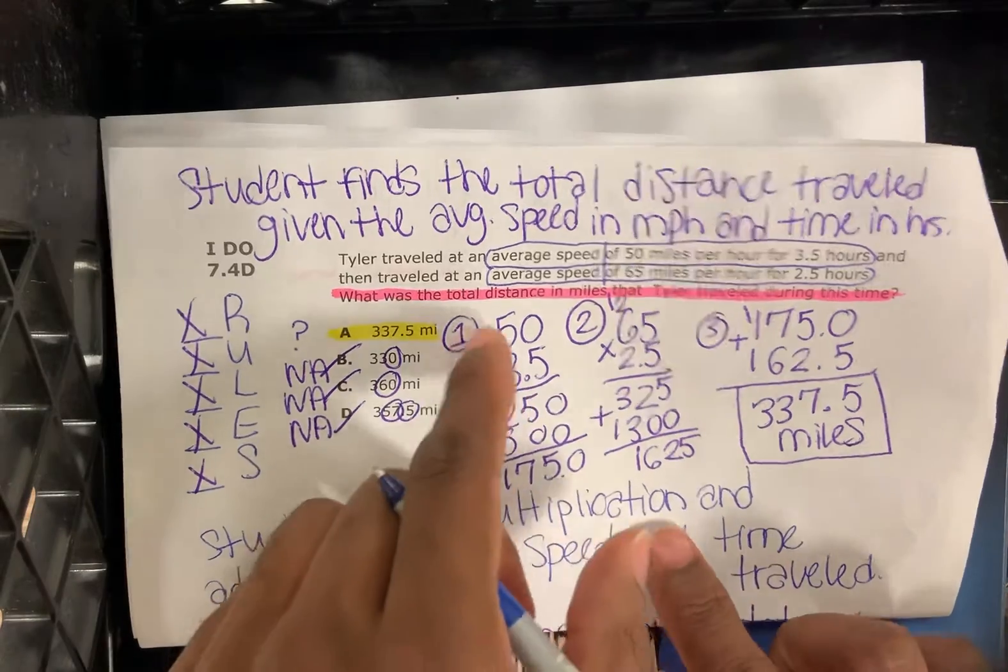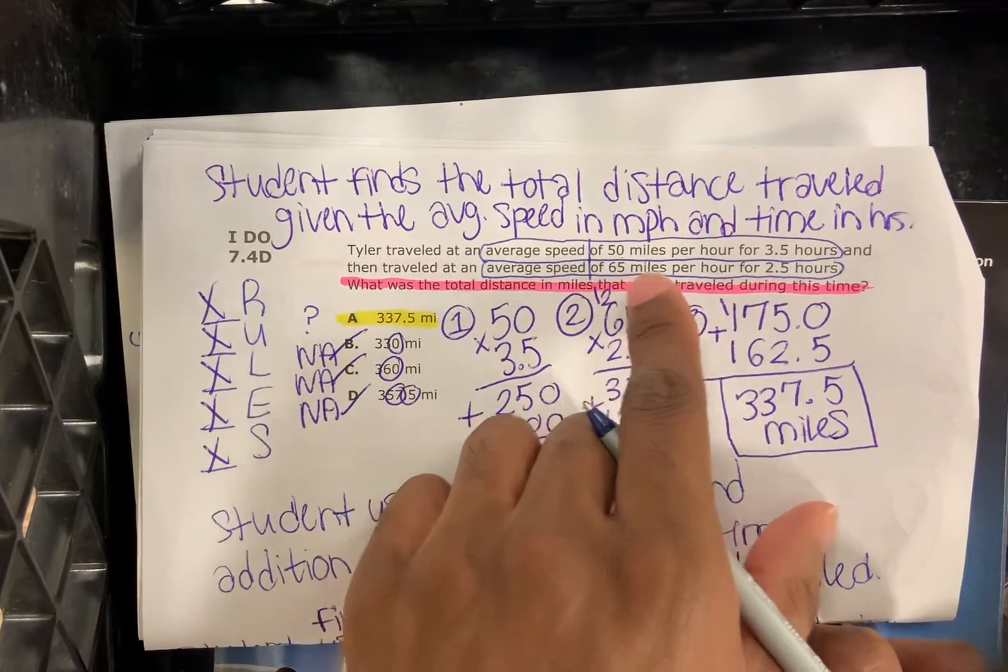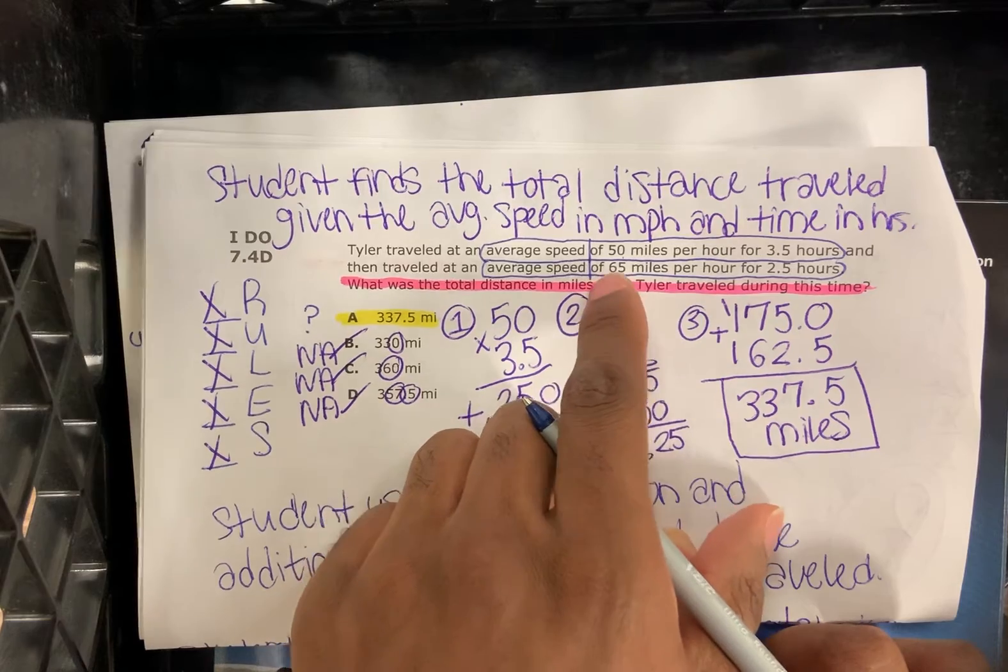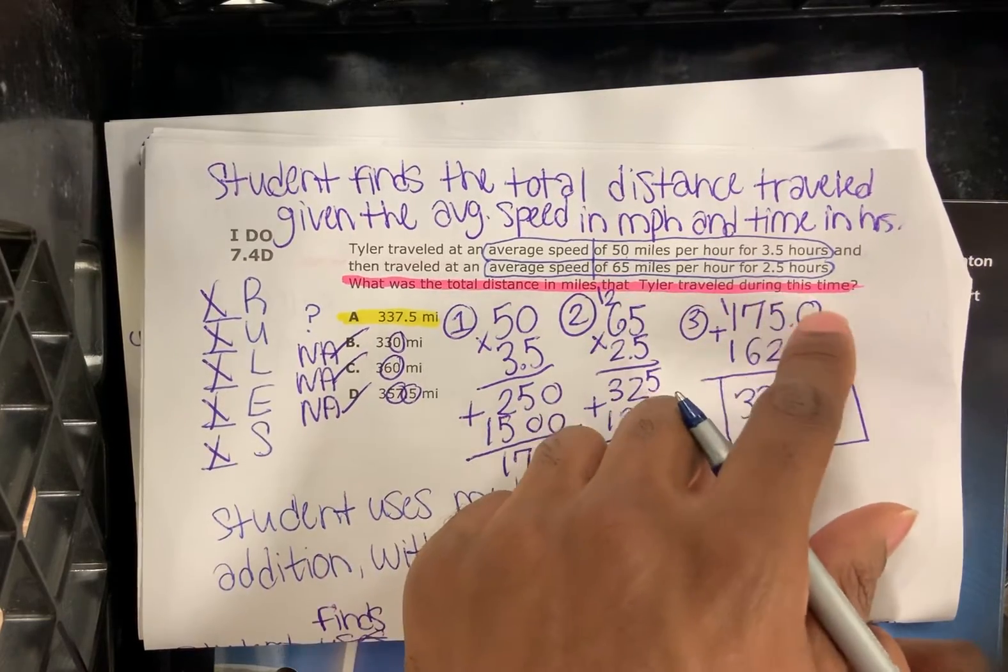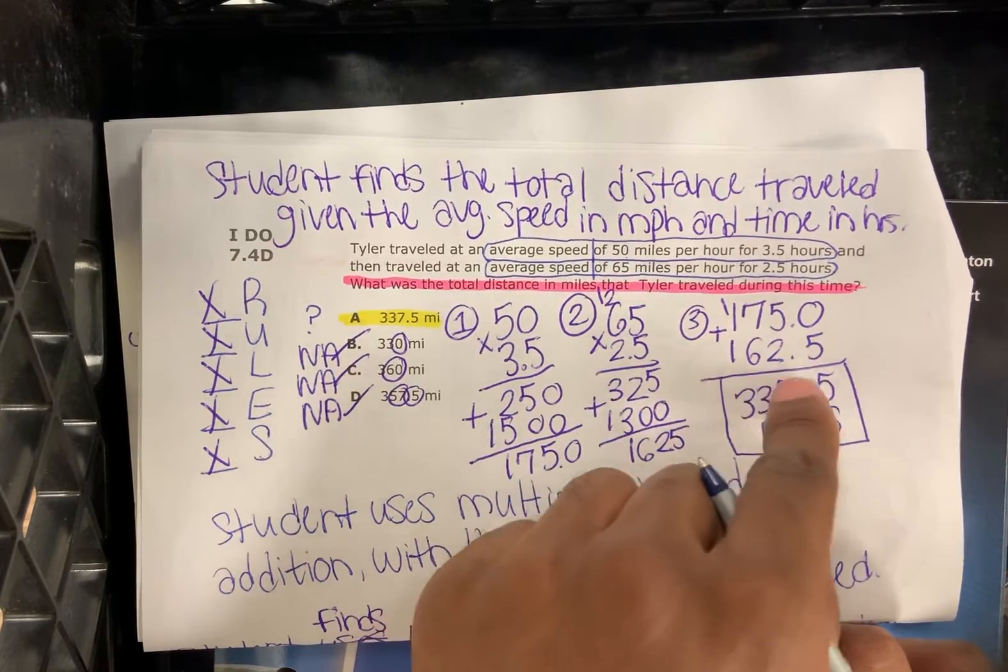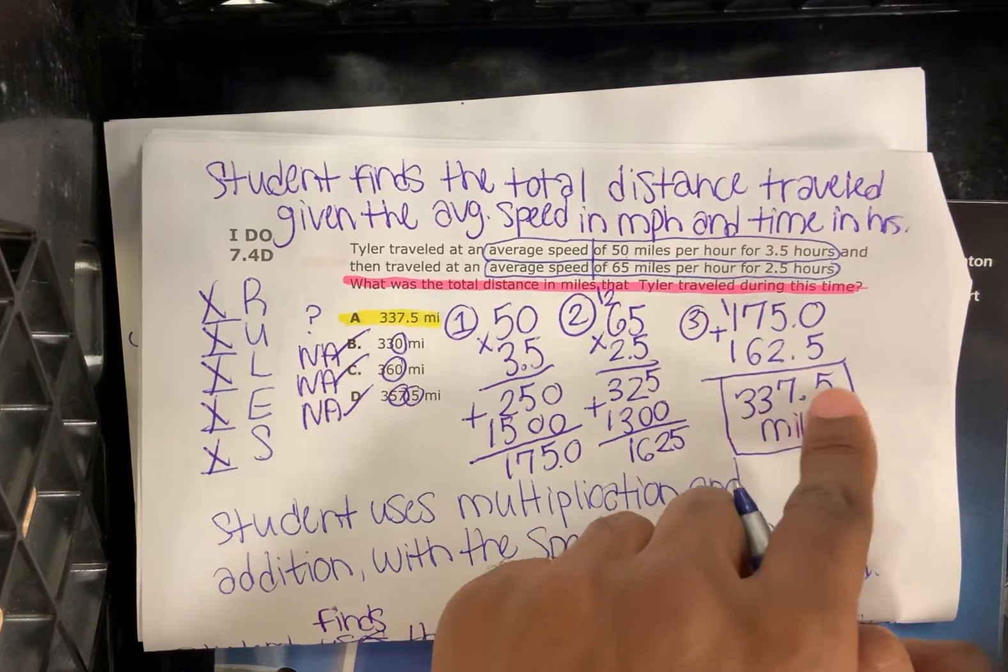So we got to add 50 miles per hour times 3.5 hours plus 65 miles per hour times two and a half hours. 175 plus 162.5 is 337.5 miles.